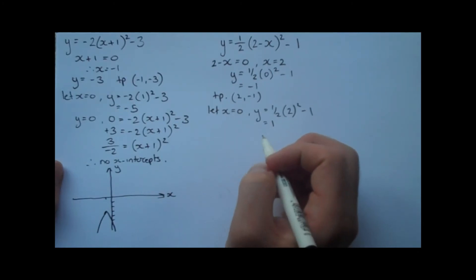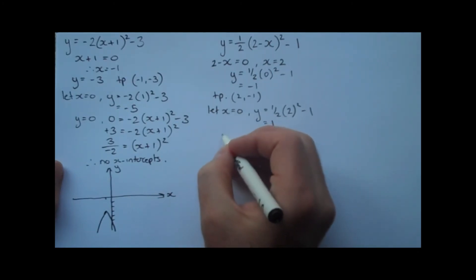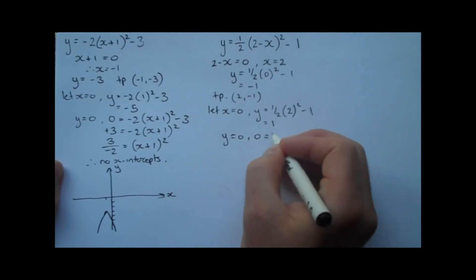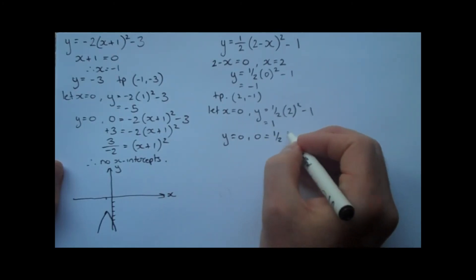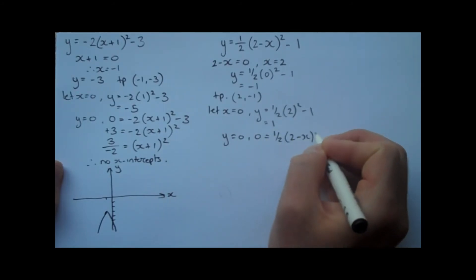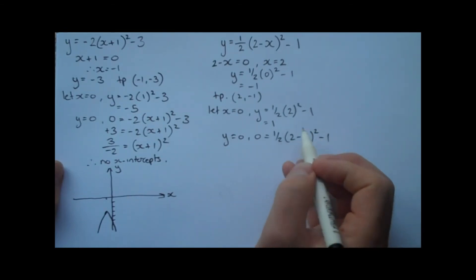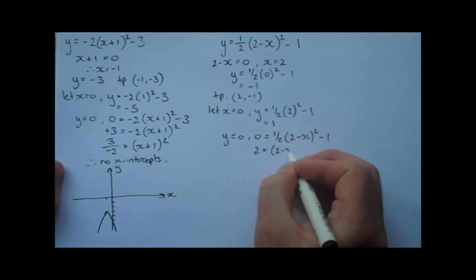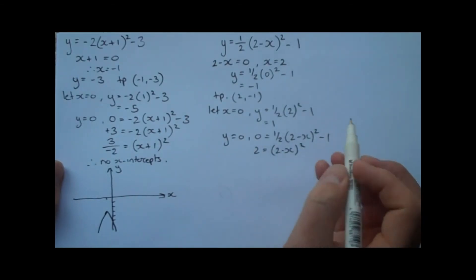Finding the x-intercepts now, let y equal zero. Zero equals a half (2 - x)² - 1. Solving for x, add one to both sides and divide by a half. So it becomes 2 equals (2 - x)².